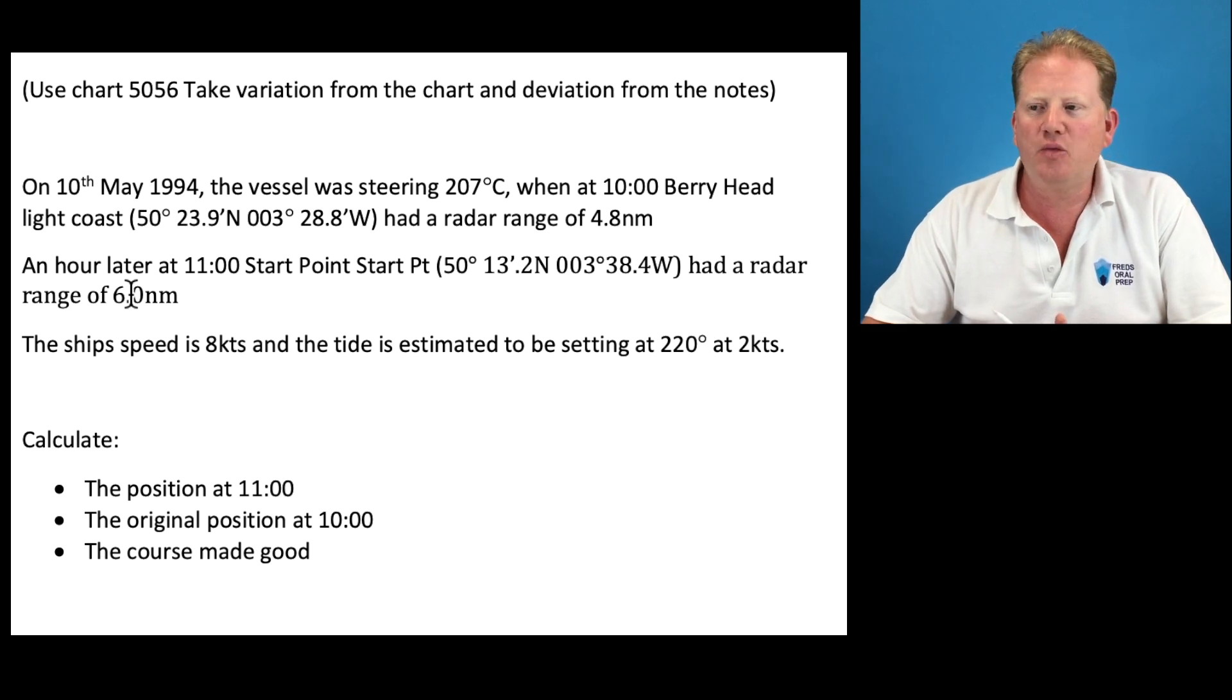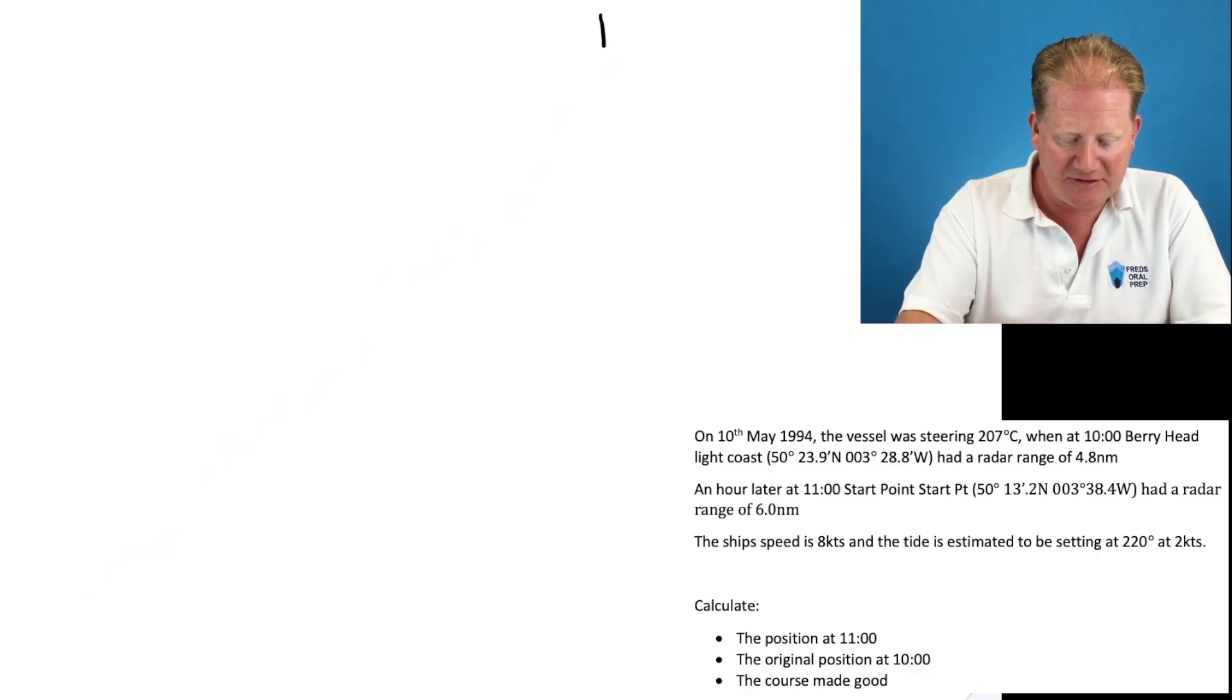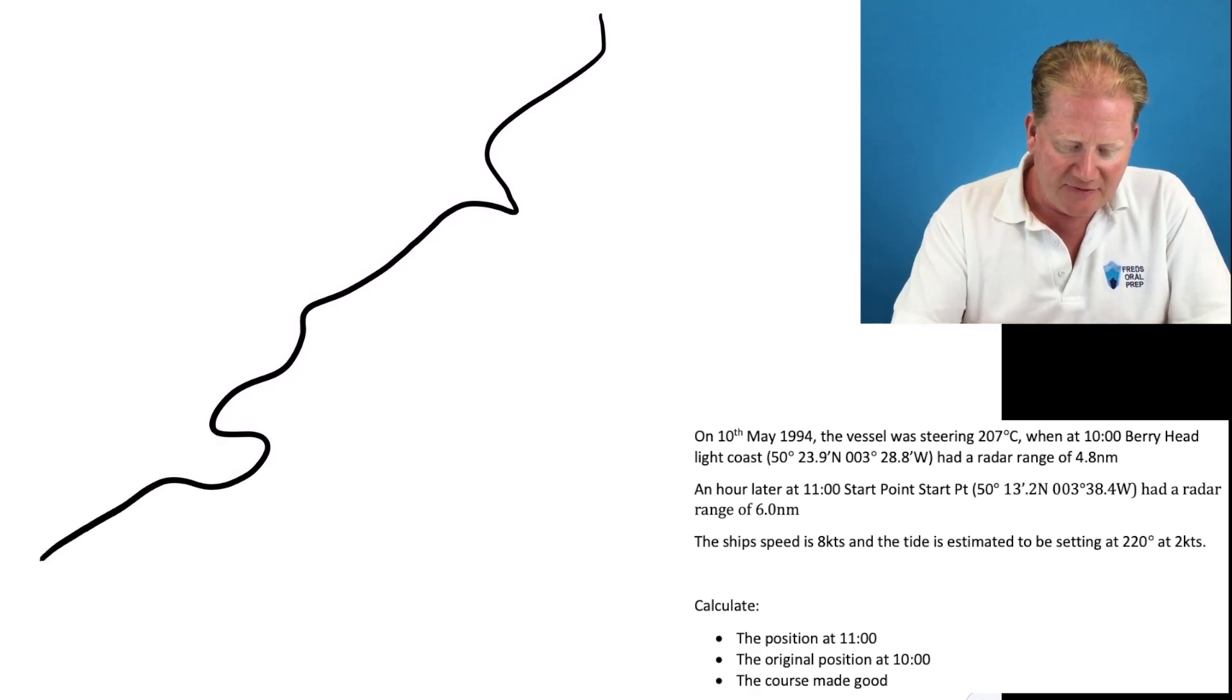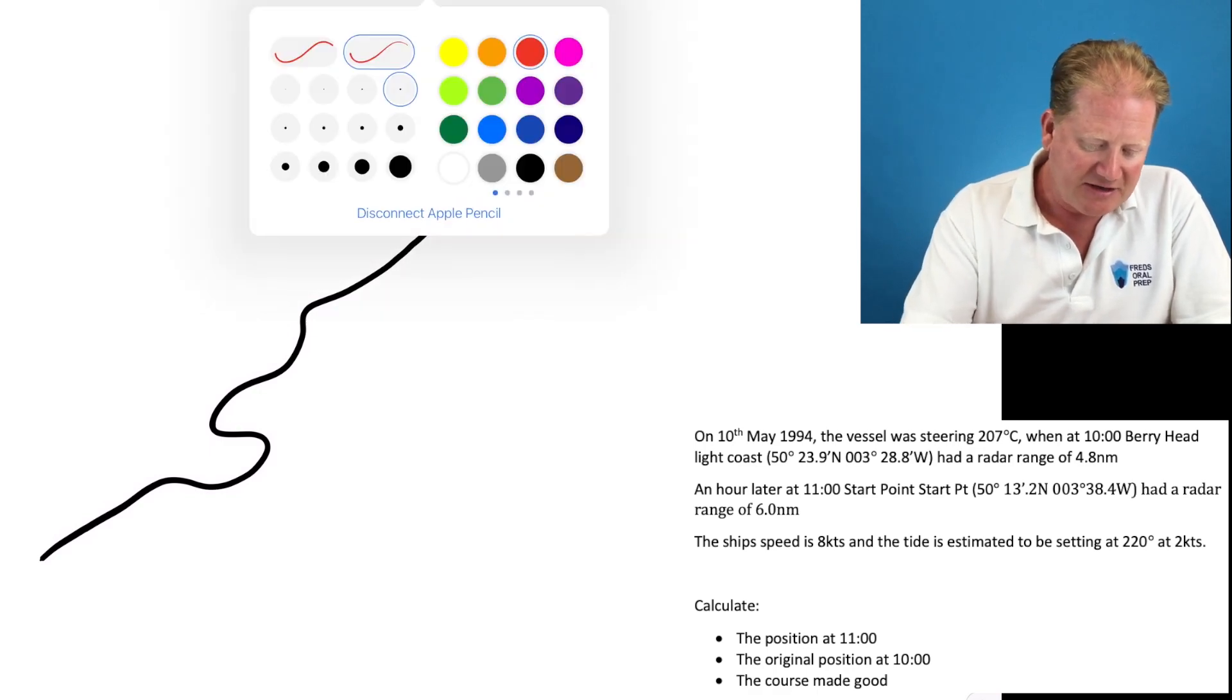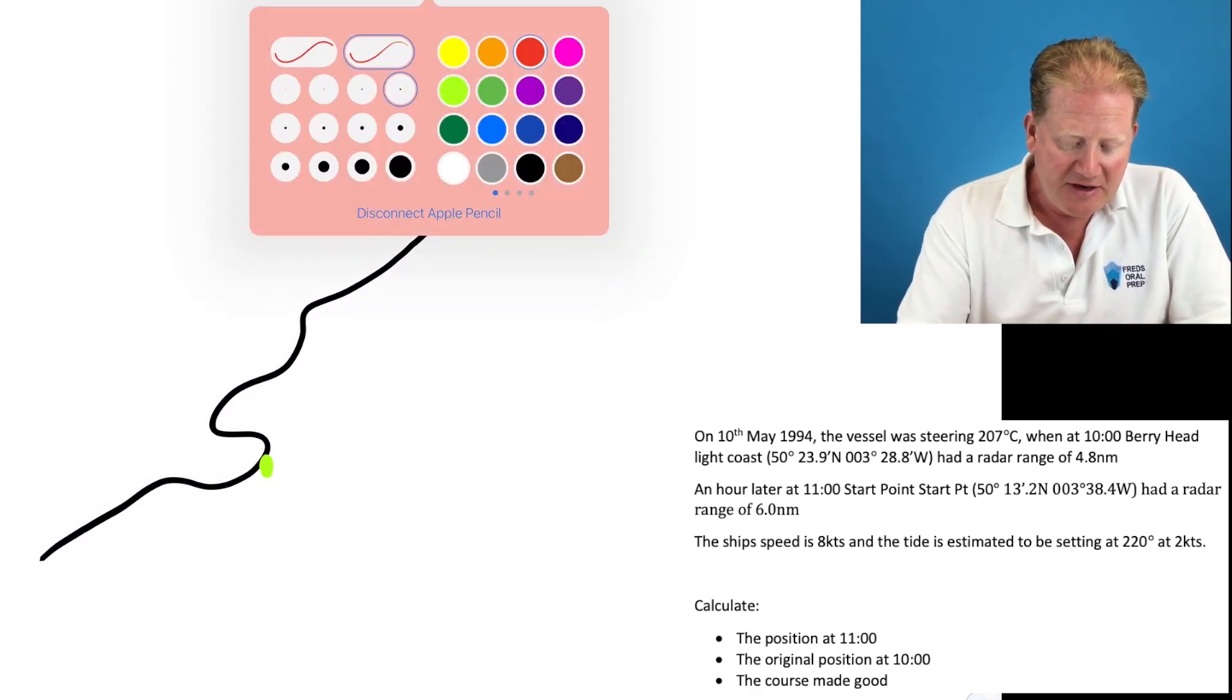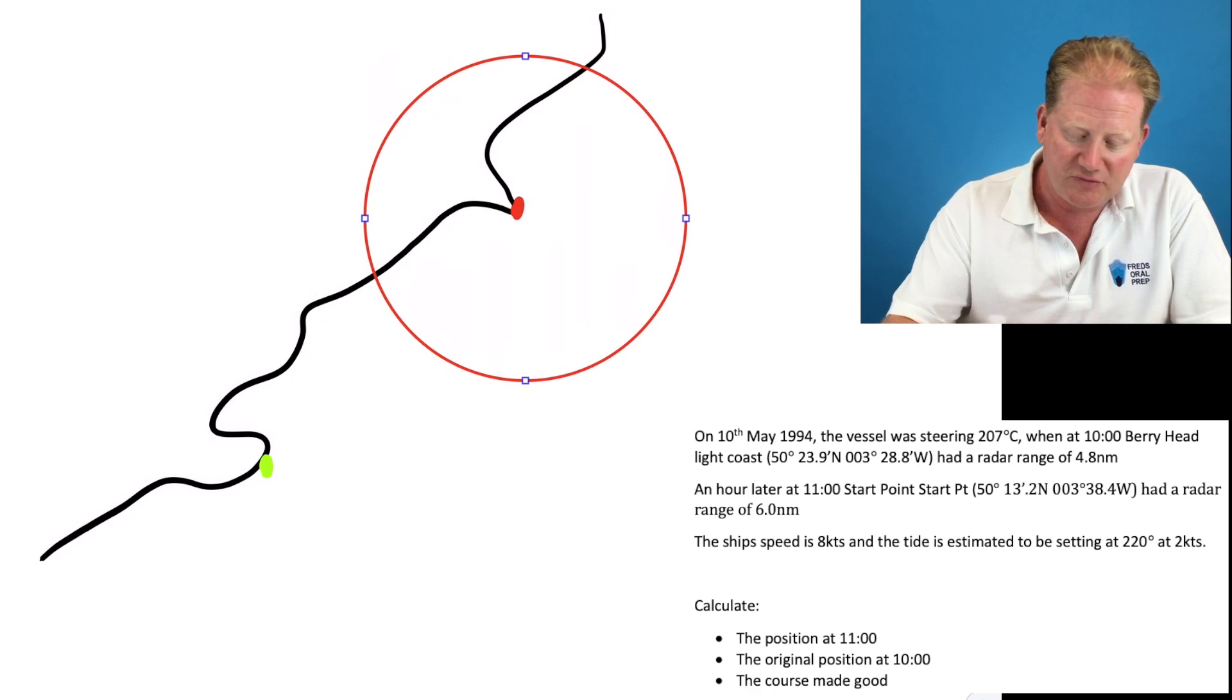I have created a worked example here and I'm going to explain it using my iPad. We'll say there's a little bit of land that comes a bit like this. And we have two points on it. We have a first point here and a second point further down, and they are both radar conspicuous points.